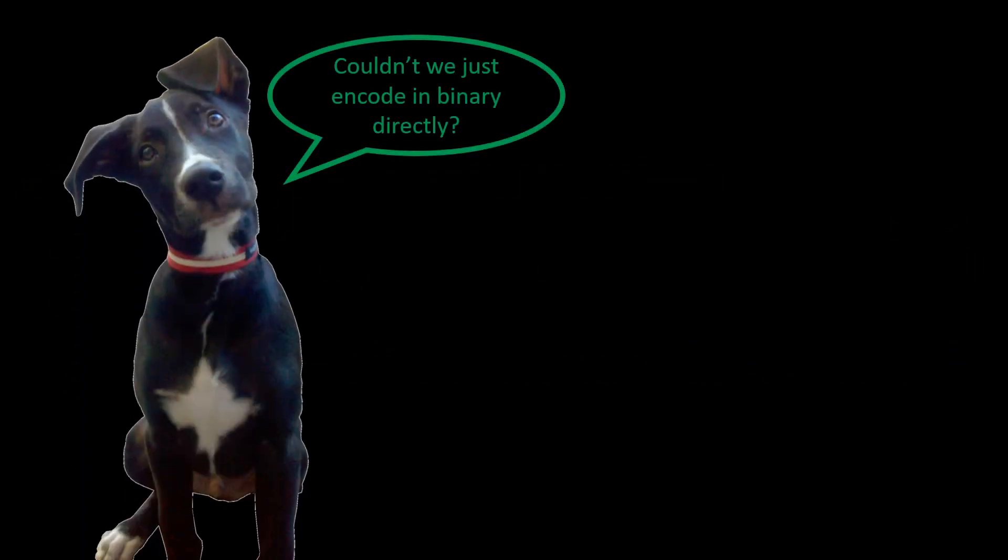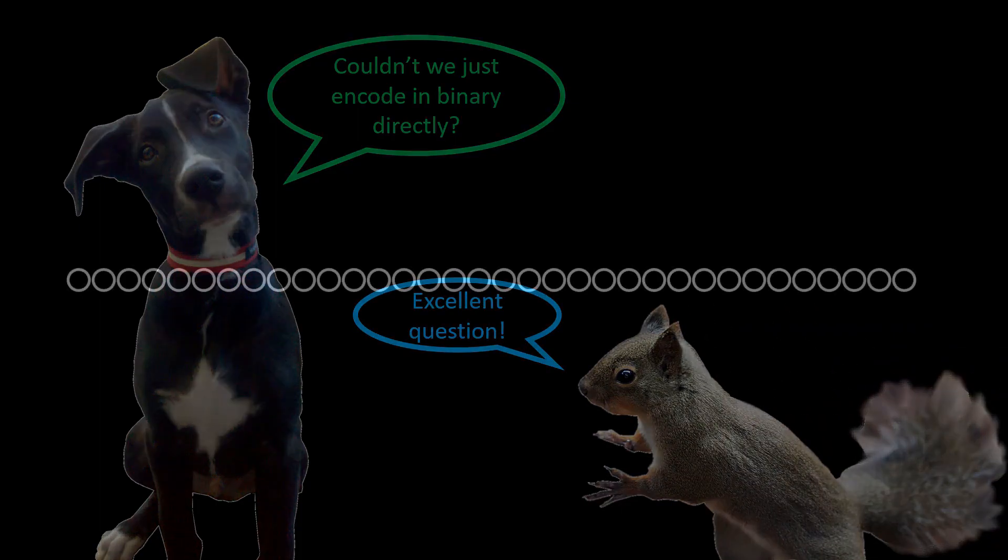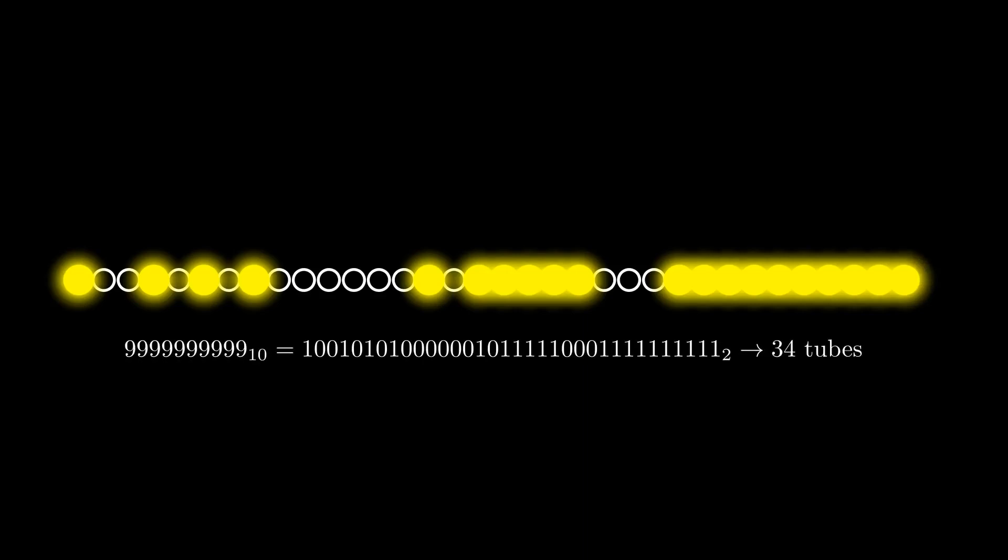Except, you may be thinking, couldn't we just encode in binary directly? Excellent question. Yes we could. If you encode that number in binary directly, you only need 34 vacuum tubes for 34 bits. The only problem is, that's a completely different architecture.